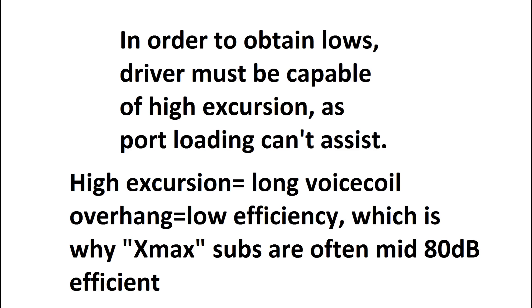In order to obtain lows the driver must be capable of high excursion though. Unlike a ported box which port loads the box at low frequencies these ones are port loading at high frequencies. And it means that down low it's just the raw movement of the driver creating all the sound. So you need a high excursion sub to move a lot of air to be able to keep up with the output. So this often means that you need a long voice coil which overhangs the voice coil gap on either side and leads to the sub being inefficient. Which is why high X-Max subs have a low efficiency of 85-86 dB. So that's one of the downsides to a fourth order which is you need a high excursion often low efficiency sub.